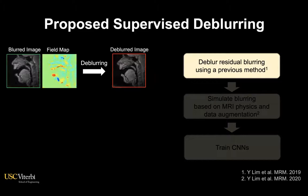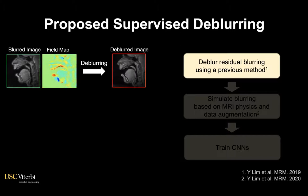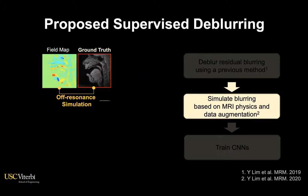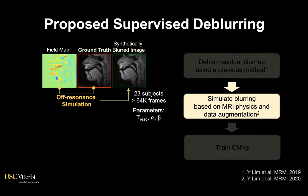The proposed method follows this pipeline. We first generate sharp images using a previously proposed method. Then we take these sharp images and field map as our ground truth and generate several blurred versions based on MRI physics and some data augmentation strategies.